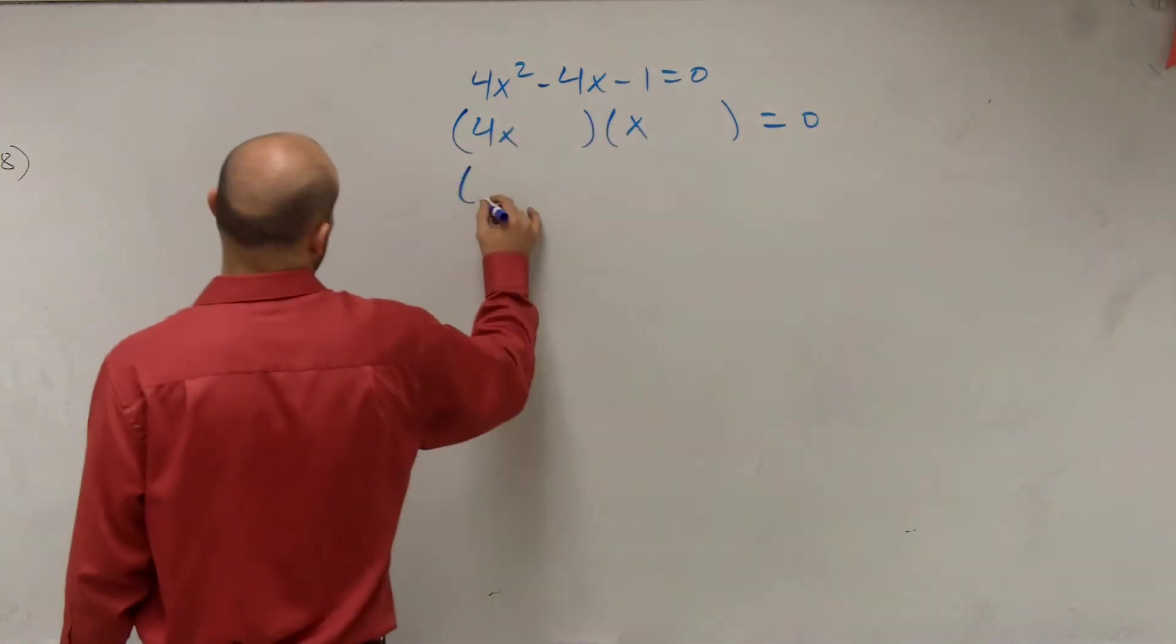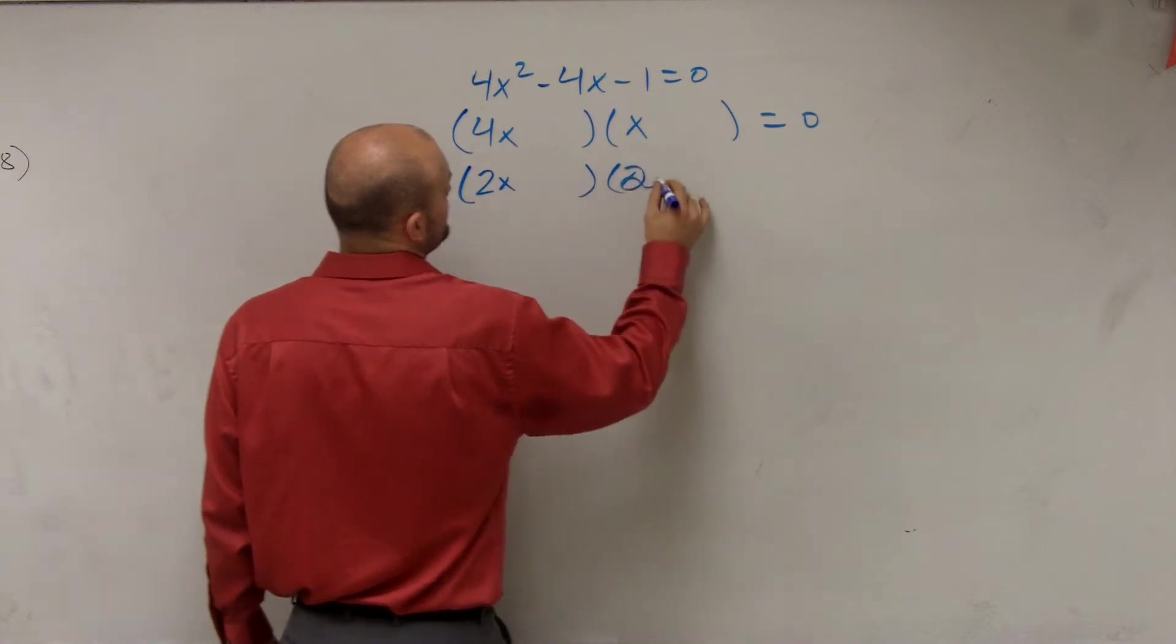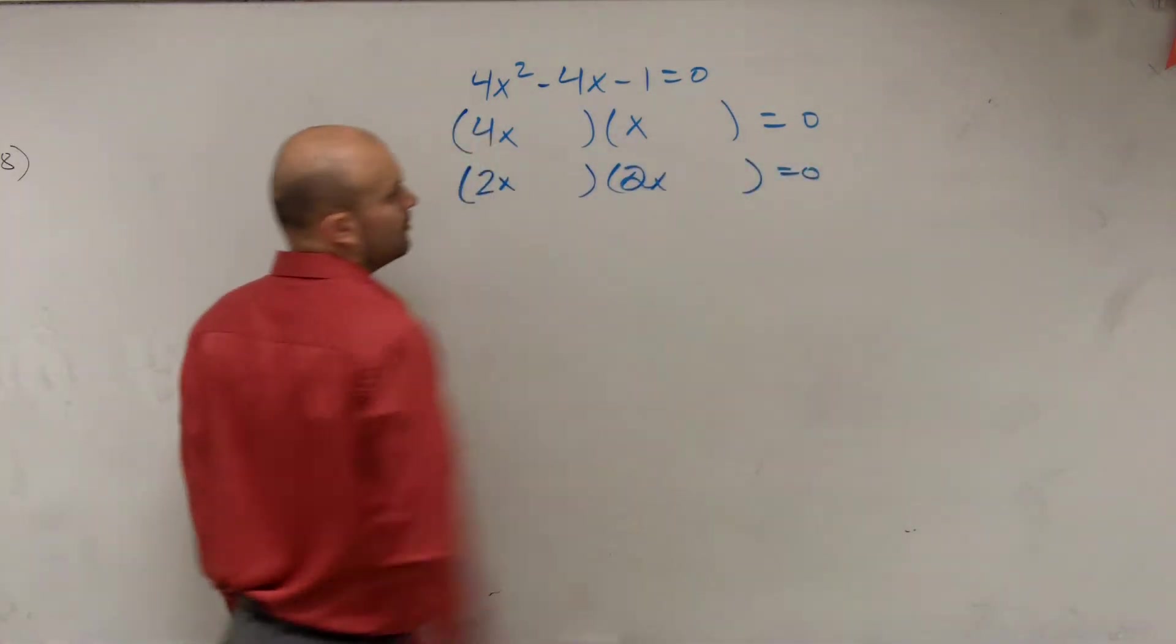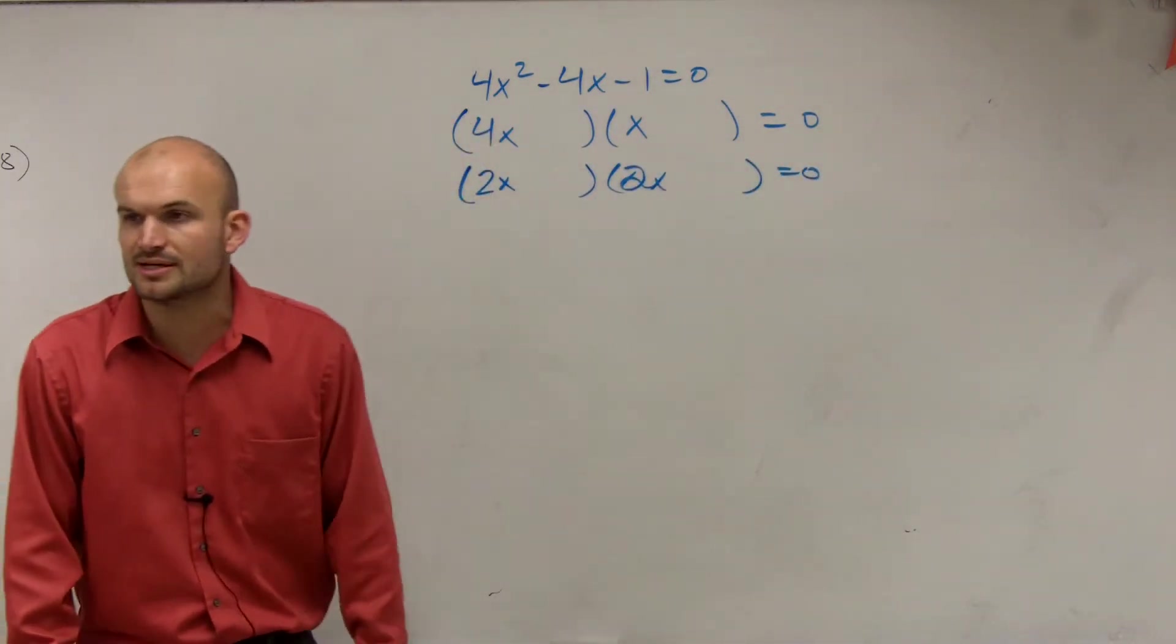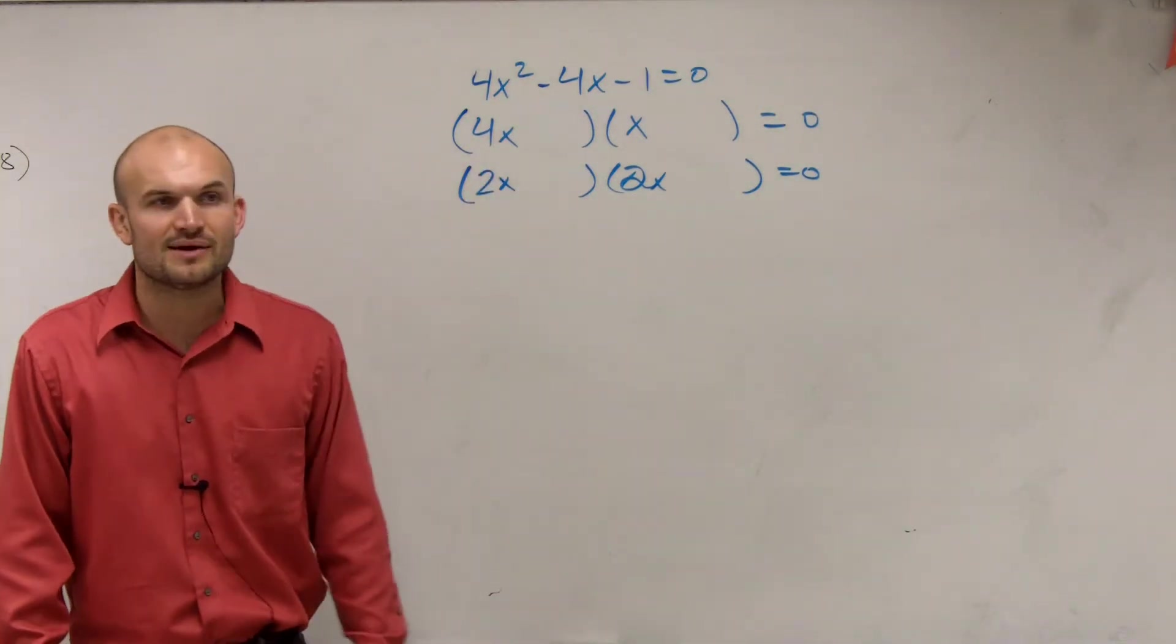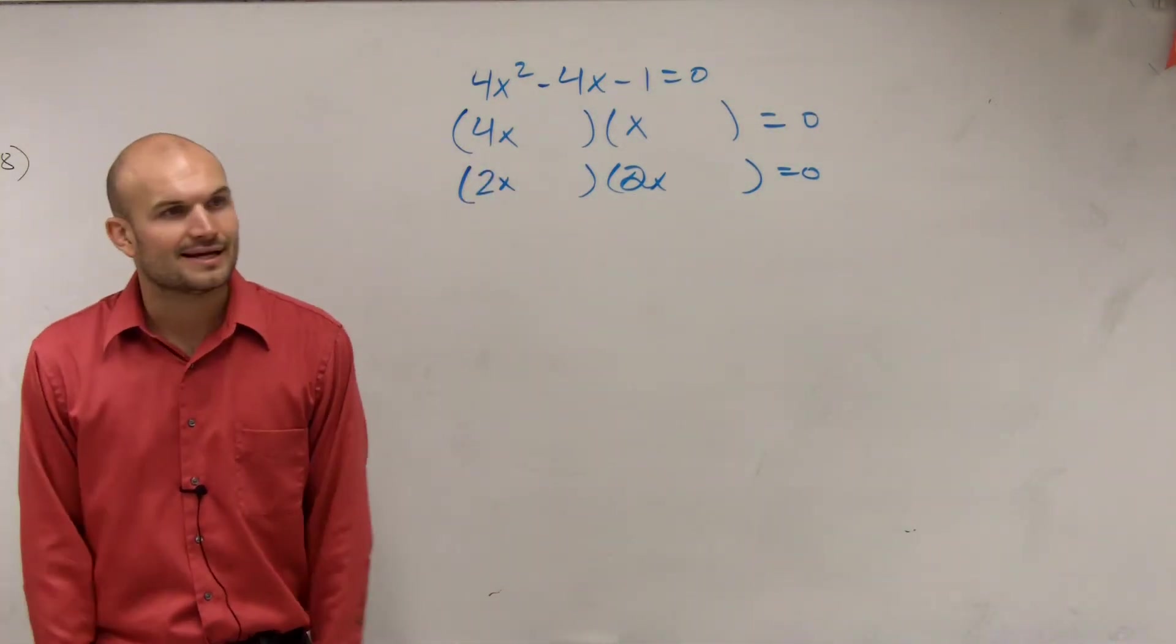So let's try maybe factoring it with 2x times 2x. Well, we come into another problem with this, because when I try to divide 4x times x and 2x times 2x, again, I can't do it, right?